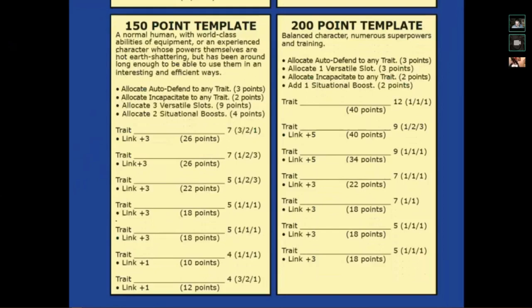All the templates assume that the point total you are given at the very start of character creation is already figured in. So you end up with exactly 150 points. The items that you see under those bullet points are bonuses - they are not traits themselves, but add-ons that you buy for a certain amount of points in character creation. Every character can only have one trait with auto-defend. Auto-defend is a very powerful tool - it's a mechanic where you basically declare that you can stop any attack or danger in a scene of the game, and you will evade fully without taking damage. You can only use that once per scene, basically once per fight.